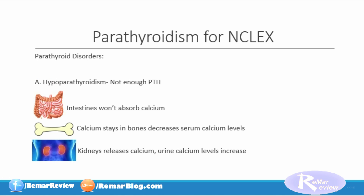Now, we're going to talk about two parathyroid disorders. The first one is hypoparathyroidism, which means that you do not have enough of the parathyroid hormone. And when you don't have enough, you're going to lose some calcium. So the intestines won't absorb the calcium that they normally would. As far as the bones go, there'll be less resorption, so the calcium will actually stay in the bones, which will decrease serum calcium levels in your patient. And the kidneys, because there's not enough of the parathyroid hormone, the kidneys will let go of all of the calcium — they'll release it, and you will see an increase in the calcium levels in the urine.